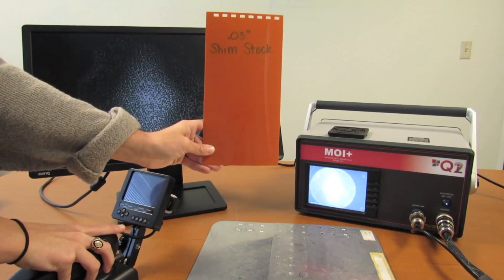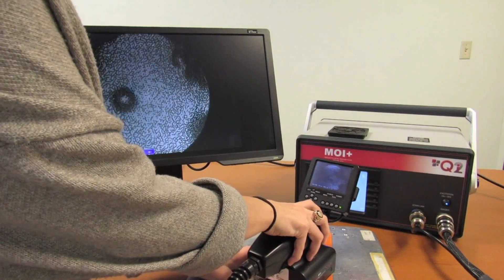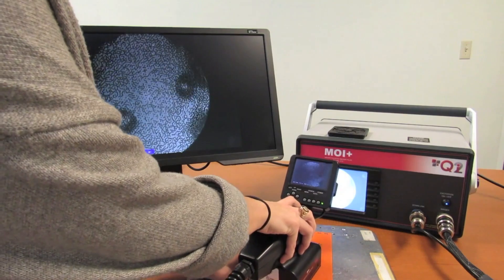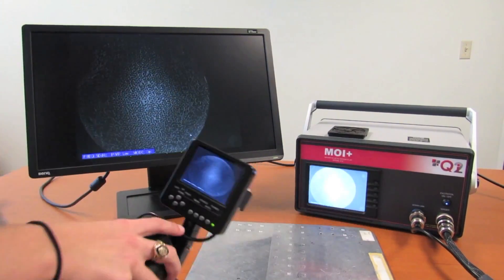Shown using this sample of shim stock, the MOI Plus provides reliable inspection through surfaces such as paint and decals for a non-destructive method of inspection, in order to increase use and life extension of aircraft structures.